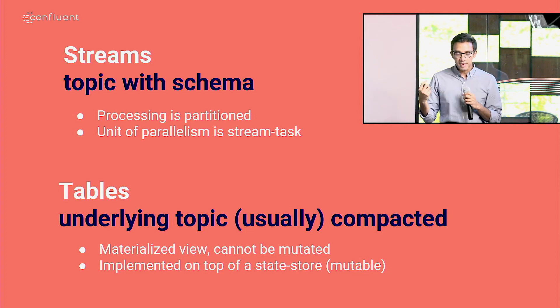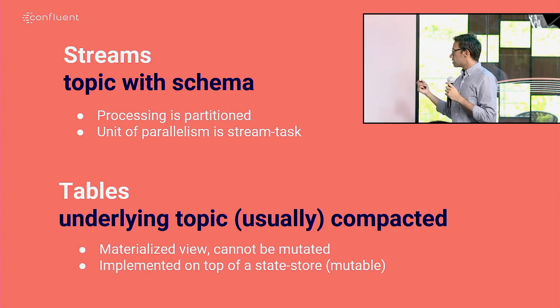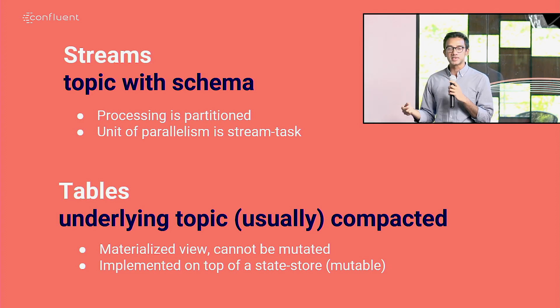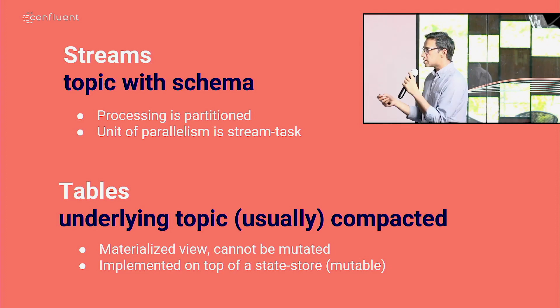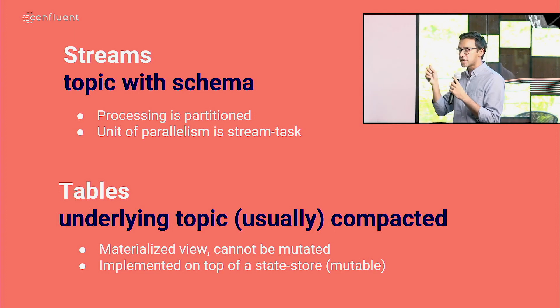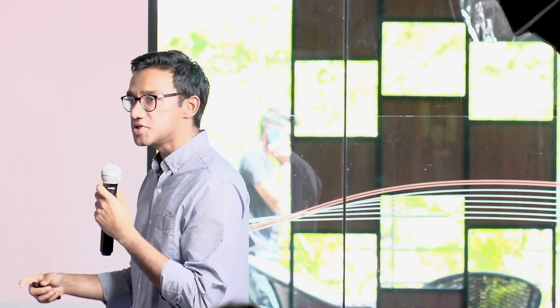Tables work slightly differently — it's really more like a materialized view. For most times, the underlying topic is a compacted topic. What a compacted topic does is, if you have a key with multiple values, you only store the latest key and value — you drop all the older values for that key. This is super important in use cases like bank balances, where for a particular user ID you just want to see their latest value. Every table has its own state store — a lightweight key-value database. If you lose the state store, it can be recreated from the underlying topic.